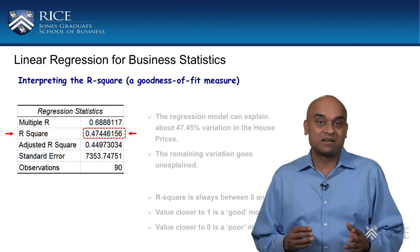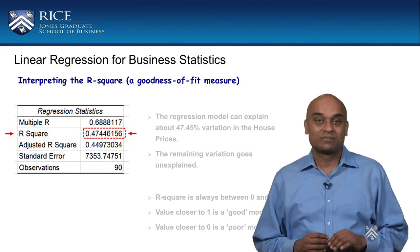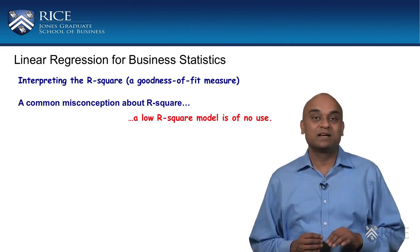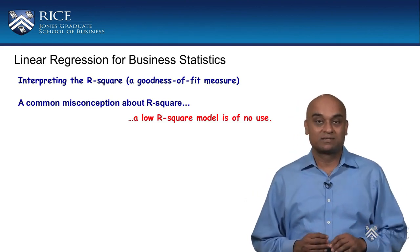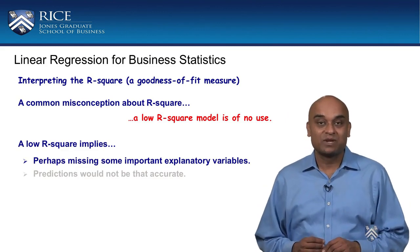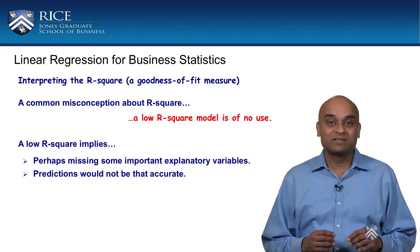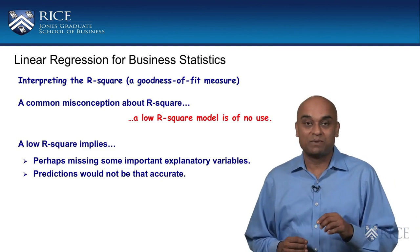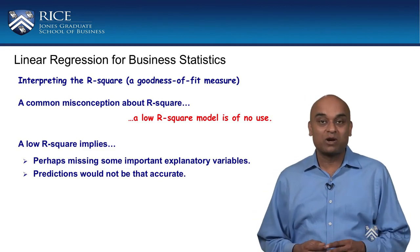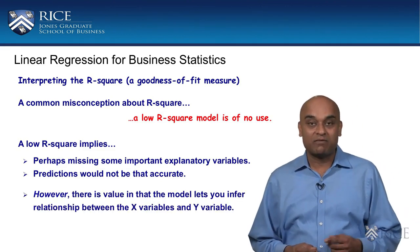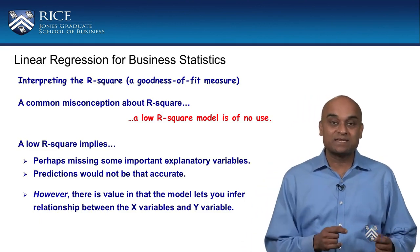I would generally consider higher values to be good R square values. A common misconception, though, is that a low R square model is of no use — that clearly is not correct. A low R square means that perhaps you are missing some important right-hand side explanatory variables in your model, and that predictions using the model may not be that accurate. However, in defense of a low R square model, remember that though the model may not be able to predict very well, there still is value in the sense that it tells you the relationship between price and number of rooms.